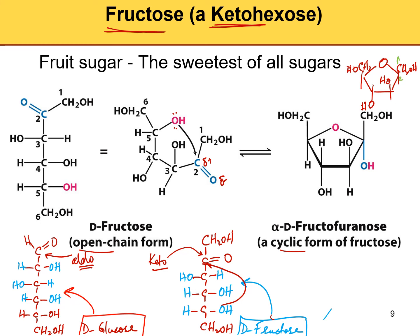Carbon numbering for the fructose ring: C1, C2, C3, C4, C5, C6. These numbering assignments are important — please keep track of them.